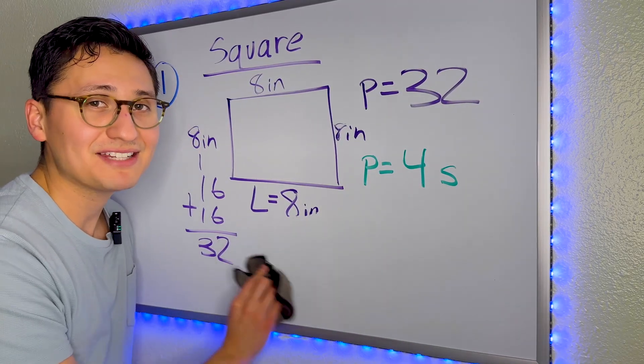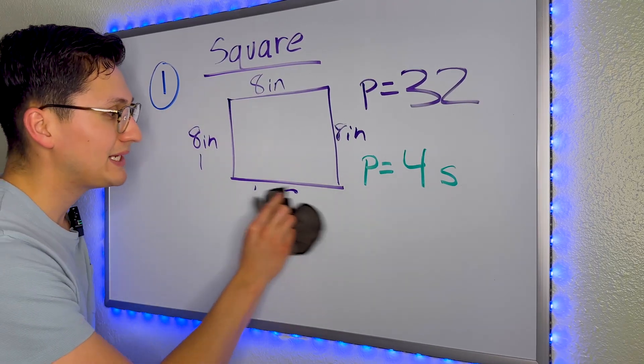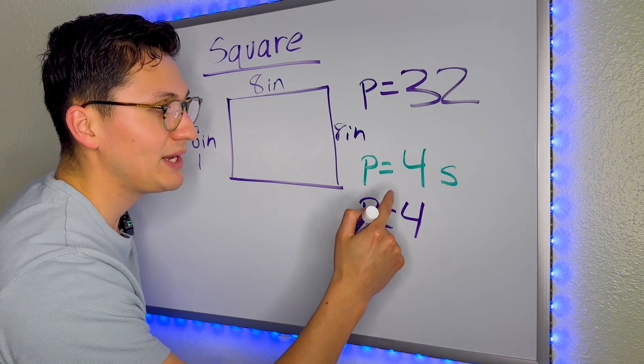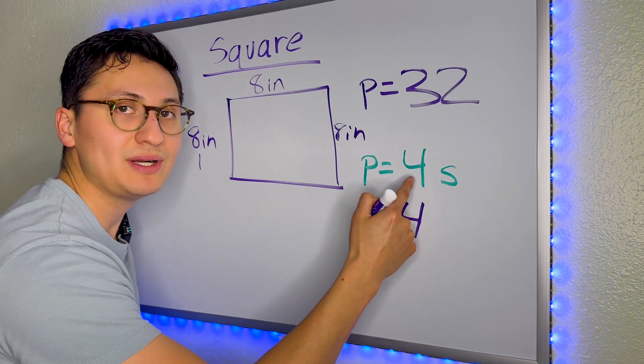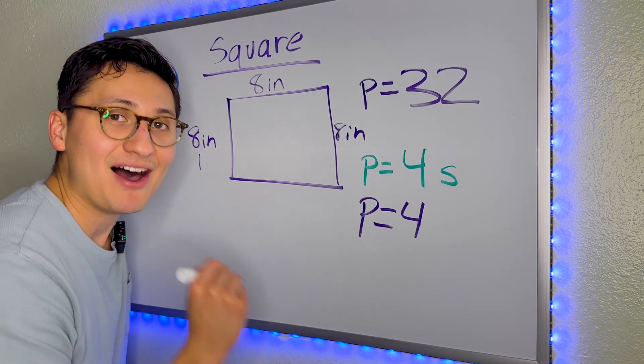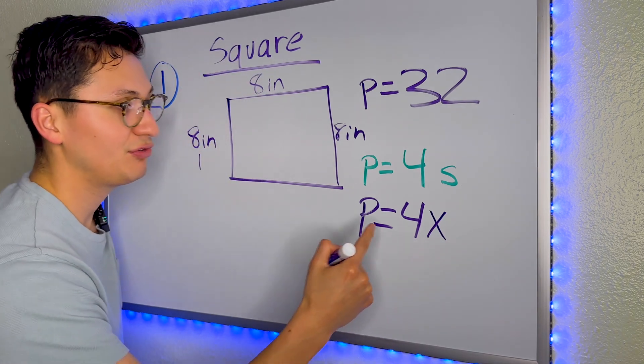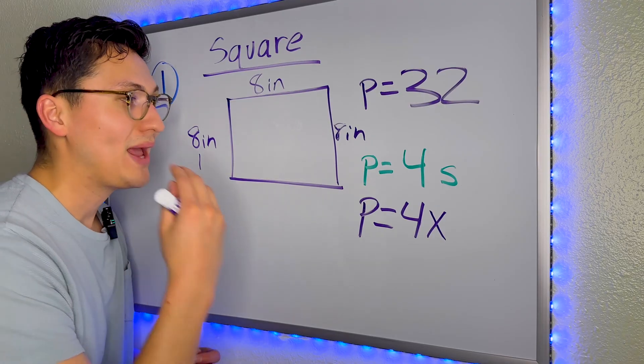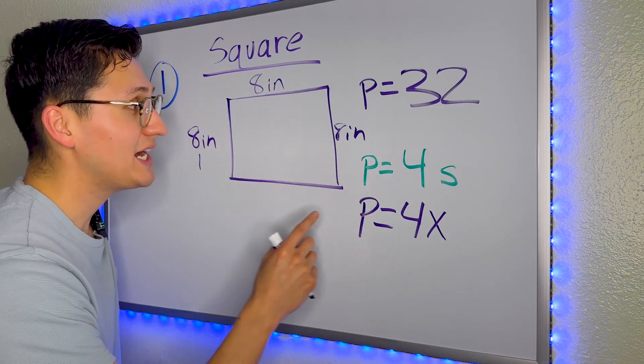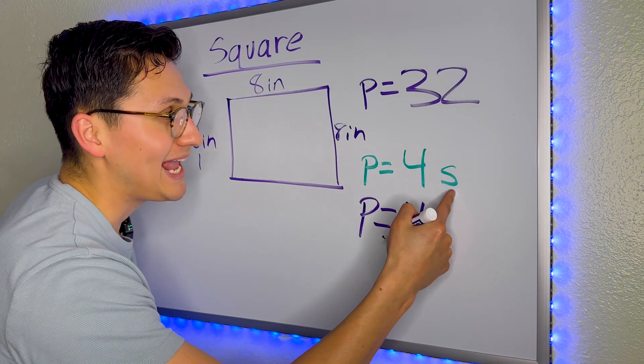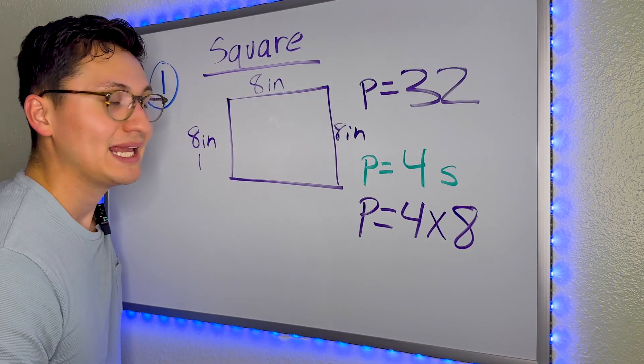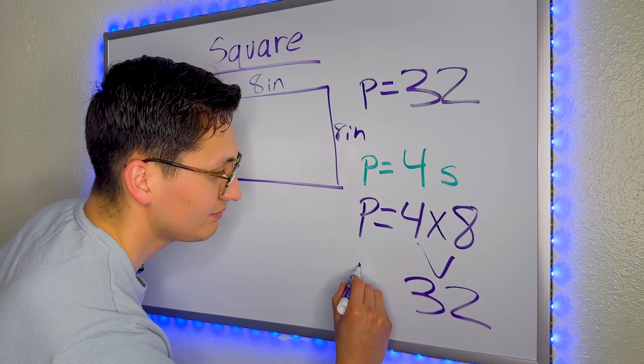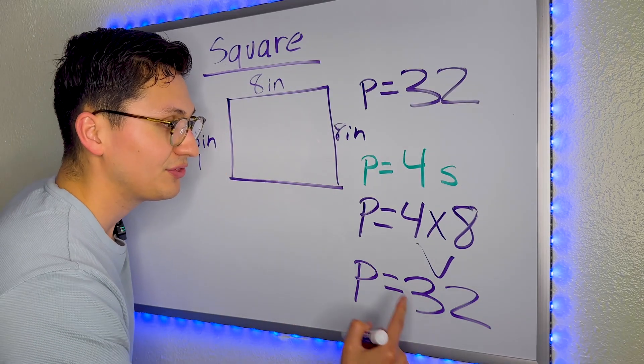Now if you've never seen that before, it's actually quite simple. The P stands for perimeter. So perimeter equals four. Whenever we have a number and a letter or two letters without a symbol in the middle, it automatically means multiply. So four multiplied with S. Now what do you think S is? S stands for side. So one side of a square is eight. So we replace the S with an eight, just like so. And all we have to do now is multiply. Four times eight is 32. And it tells us that the perimeter equals 32 inches.